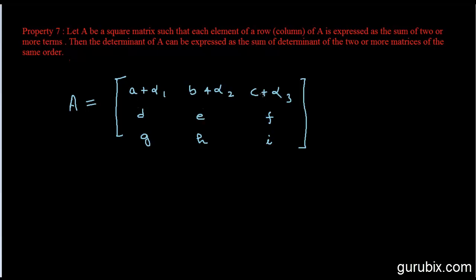Each element — हर एक element — two terms के sum के form में represent हुआ है। तो यह property कहती है कि अगर हमें matrix A का determinant निकालना है, तो matrix A का determinant — then the determinant of A can be expressed as the sum of determinants of two or more matrices of the same order.